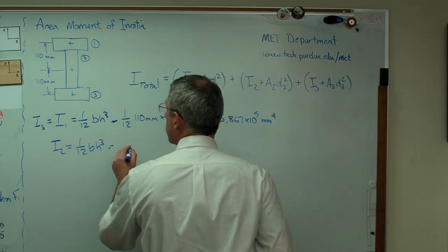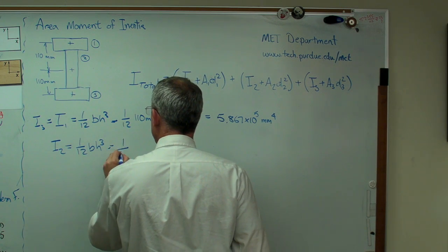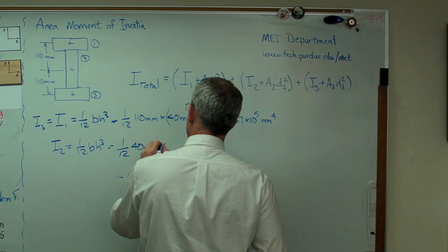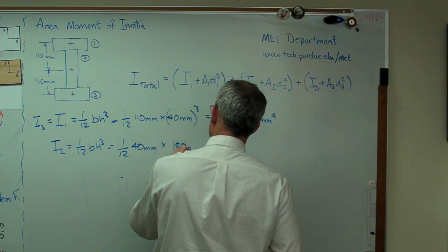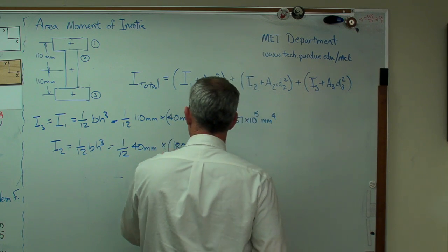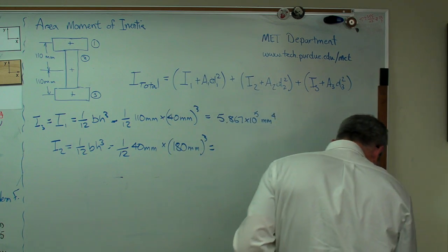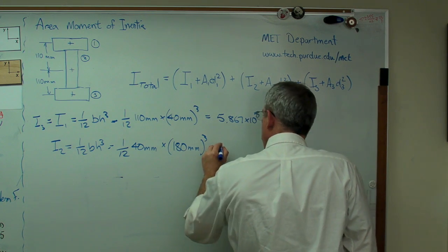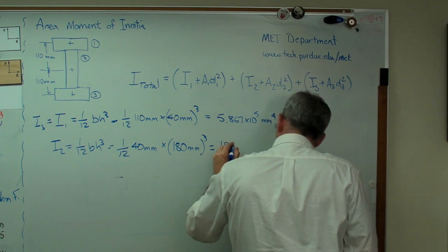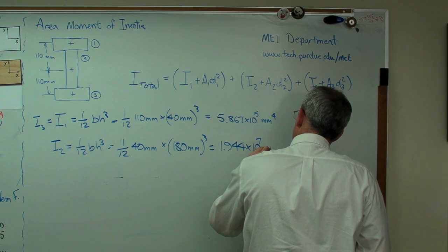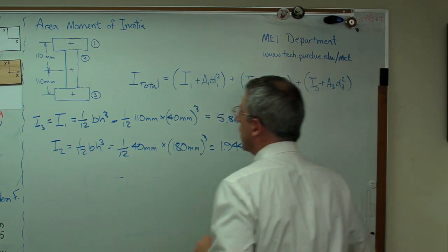Let's keep going here. The base of that is 40 millimeters and the height is 180 cubed. That turns out to be 1.944 times 10 to the 7 millimeters to the 4th.